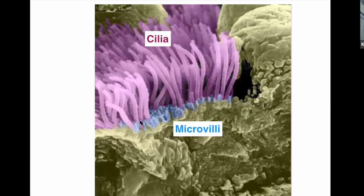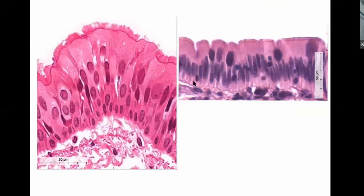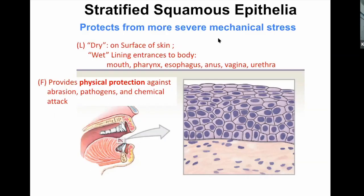In a scanning electron micrograph, microvilli appear as very short projections while cilia are much longer structures. In actual histology, the pseudostratified columnar with cilia shows that multi-layer-looking cell arrangement with more distinct projections on top, while simple columnar with microvilli has nuclei lined up together with a fuzzy border — often called a brush border. These are two distinct appearances to recognize.